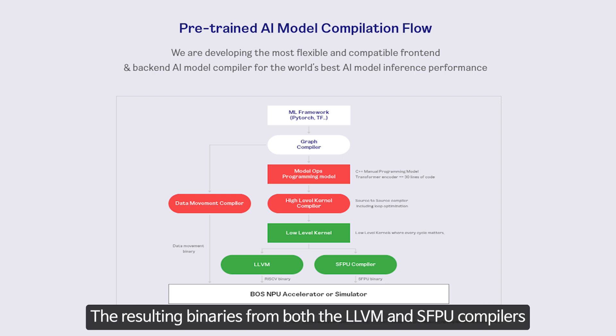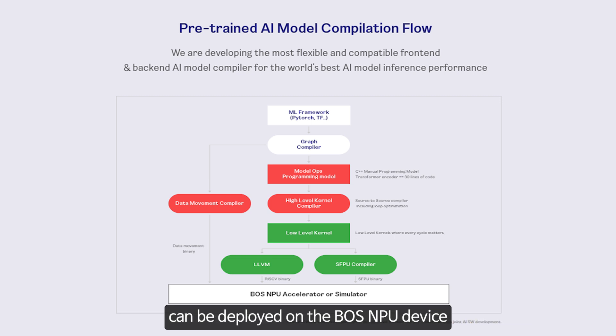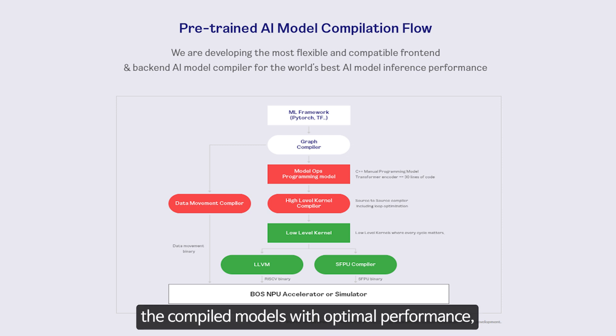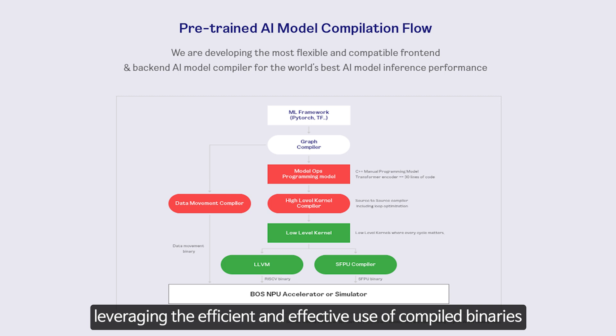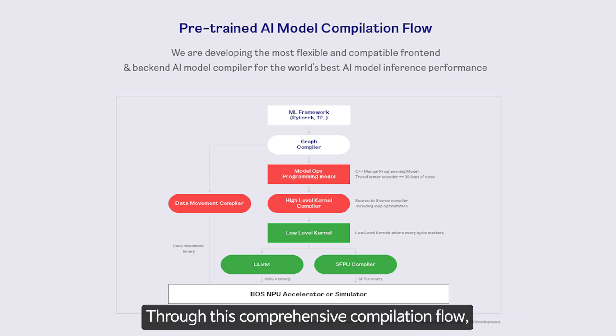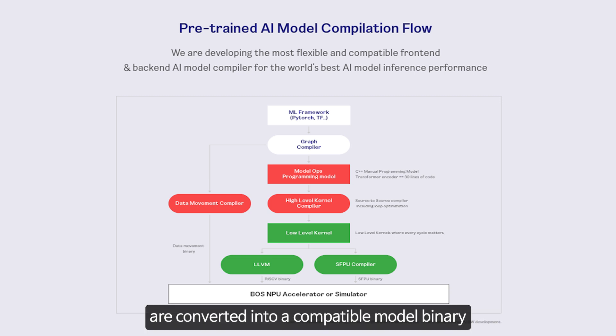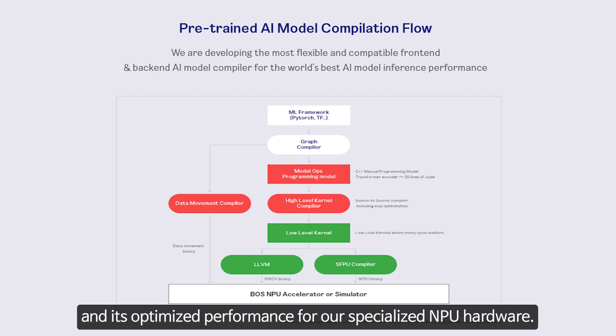The resulting binaries from both the LLVM and SAP compilers can be deployed on MPU devices or simulated by runtime software. This hardware is designed to execute the compiled models with optimal performance, leveraging efficient use of compiled binaries and data movement strategies. Through this comprehensive compilation flow, we ensure that AI models trained in various ML frameworks are converted into compatible model binaries with optimized performance for specialized MPU hardware.